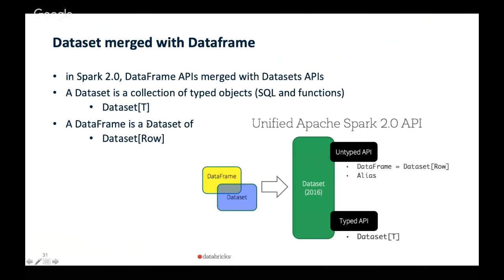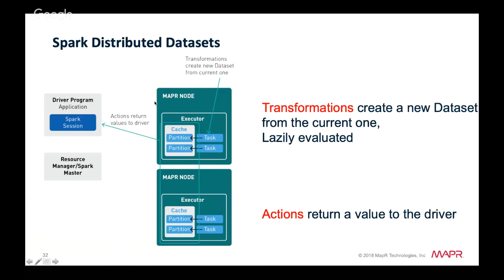In Spark 2.0 the Dataset and DataFrame APIs were merged. A DataFrame is just a dataset of row objects and supports SQL; a Dataset is a collection of typed objects supporting SQL and functions. With both you have transformations, which are lazily executed and create a new dataset, and actions, which return a value to the driver.